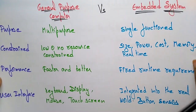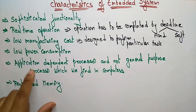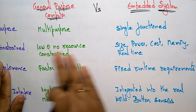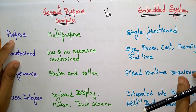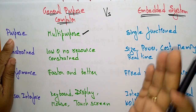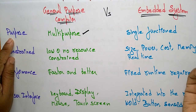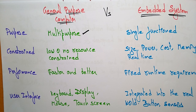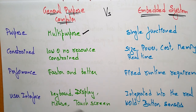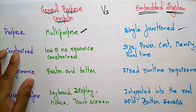Now let's look at the difference between a general purpose computer and an embedded system. In terms of purpose, a general purpose computer is multi-purpose — it is not designed to perform a single particular task. You use your computer for communication, work, storage, entertainment, and more. So it is a multi-purpose system, whereas an embedded system is a single-function system.